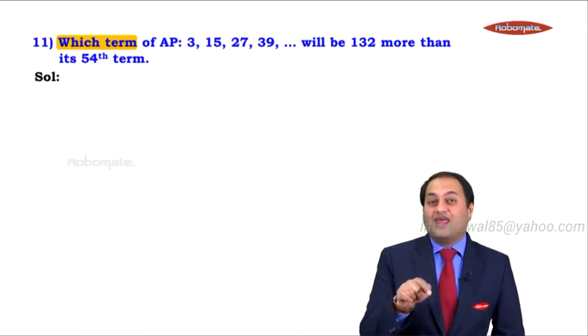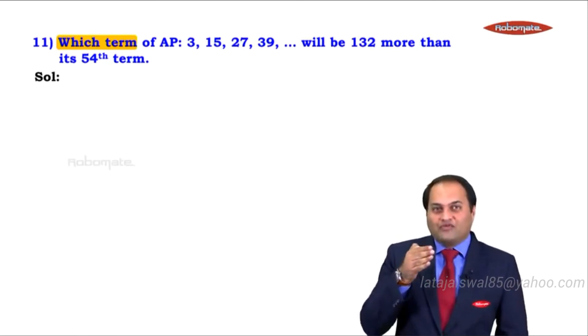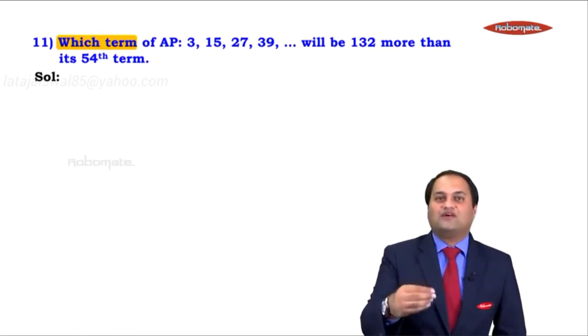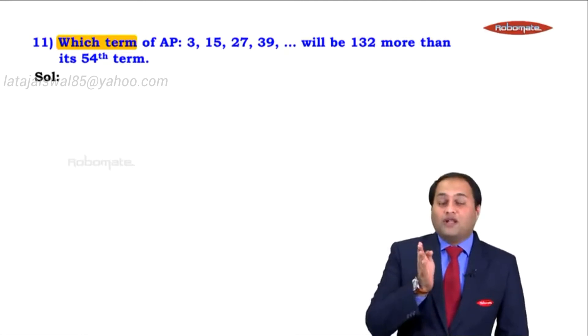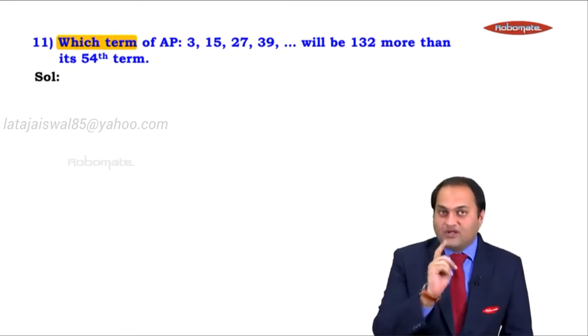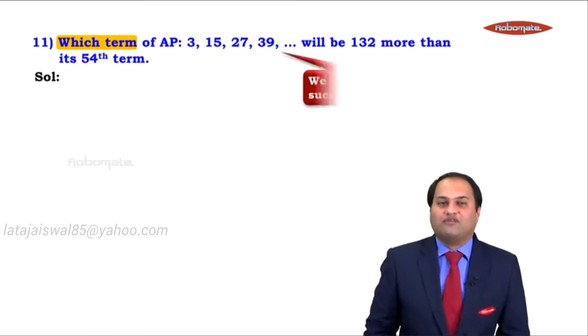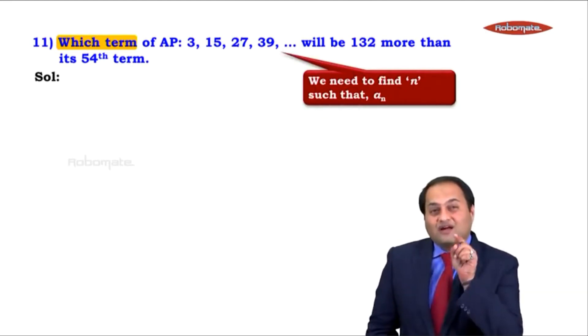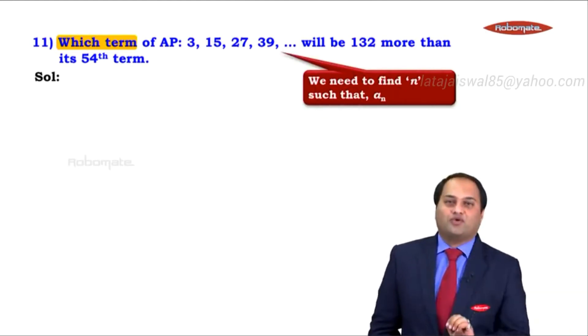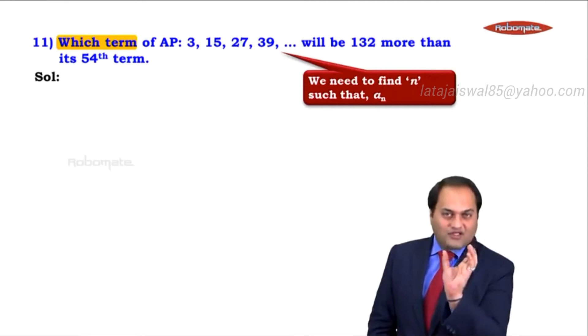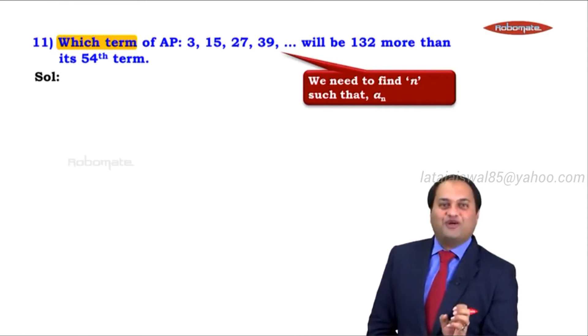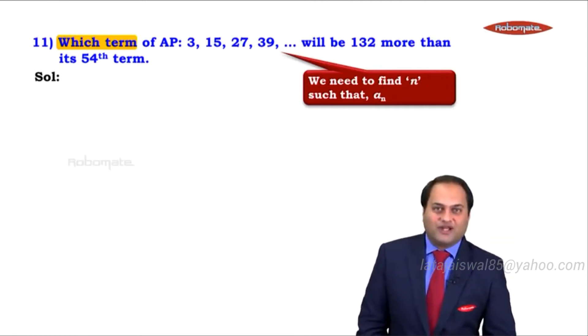To find the value of n, in every sum n was given. You all remember that. Find n such that an is equal to something. But here, an is not given to us. Rather, there is a condition related to an given to us. Again, there is a statement given in English. We need to convert that into a mathematical statement.